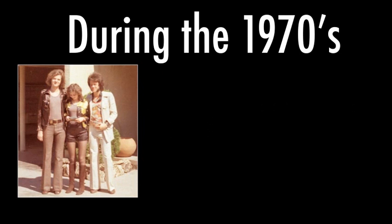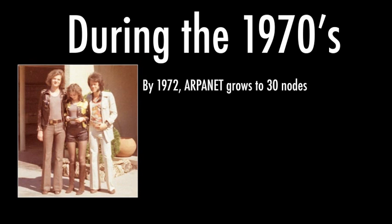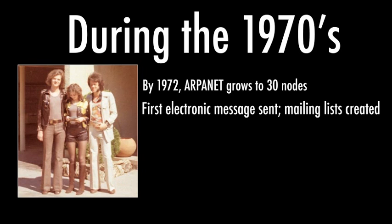In the 70s, around 1972, ARPANET had 30 nodes — multiplying by eight in just four years. The first email was sent, though ARPANET was never designed to send email. Operators noticed different nodes were sending small tidbits of information back as electronic messages — a very primitive form of email. As a result, they came up with the concept of the mailing list, which allowed one message to be sent to everybody.